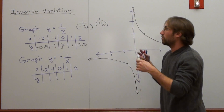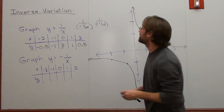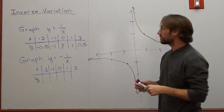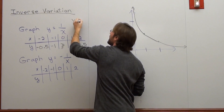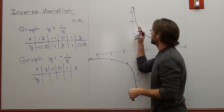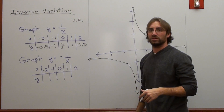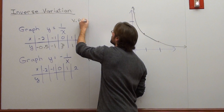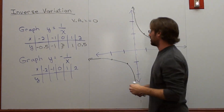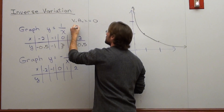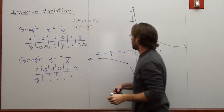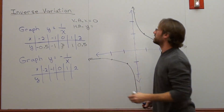So when we look at this, the vertical asymptote for this problem is at x equals zero. The horizontal asymptote is at y equals zero. It will never touch there either.